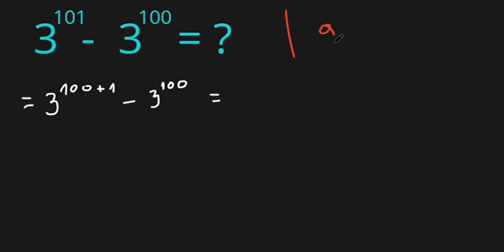Now we need to know this formula: a to the power of b plus c equals a to the power of b times a to the power of c.